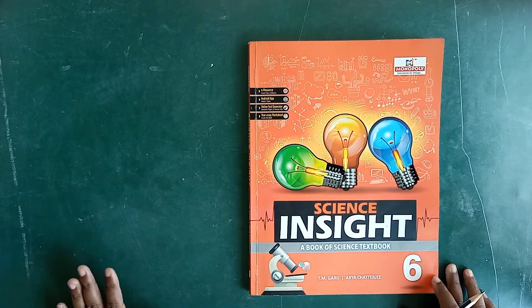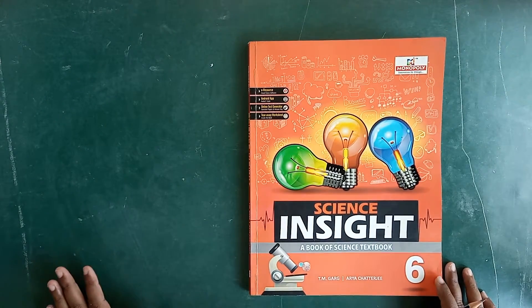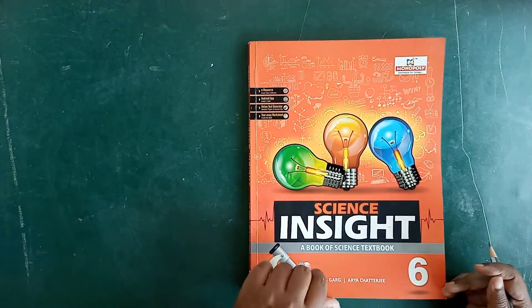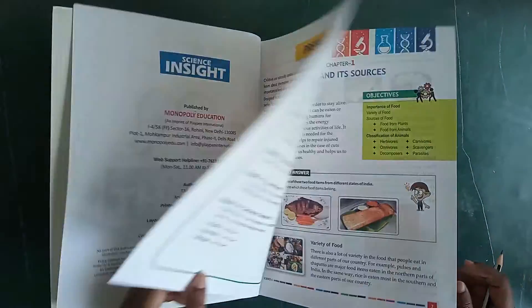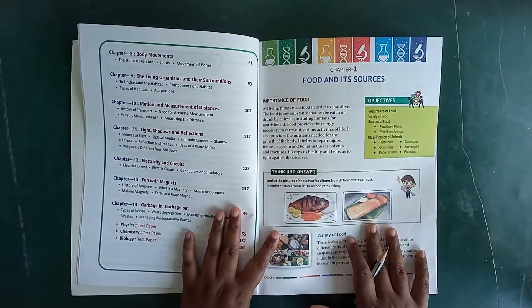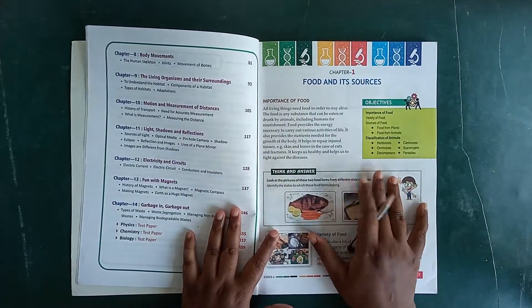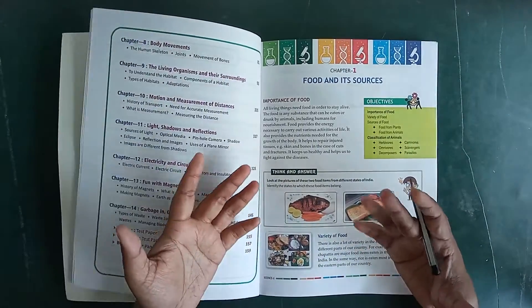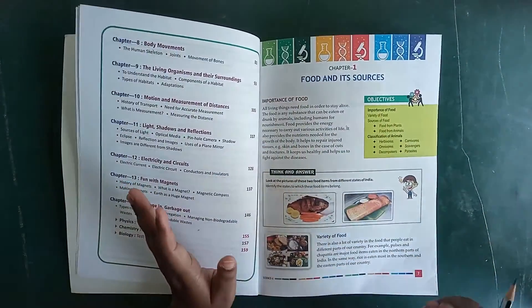Hello students of class 6. Today we are going to study science. In science, we have completed our chapter number 1, food and its sources, means what we eat.